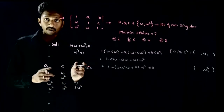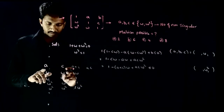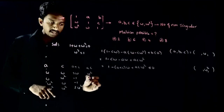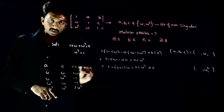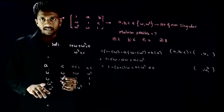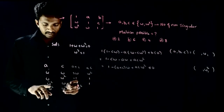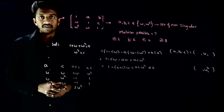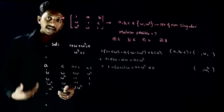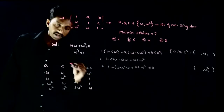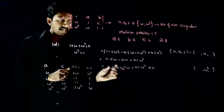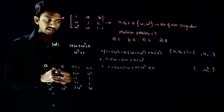Now computing ac for each case: ω·ω = ω², ω·ω² = ω³ = 1, ω²·ω = ω³ = 1, and ω²·ω² = ω⁴ = ω. These are the four cases of a+c and ac that we have.